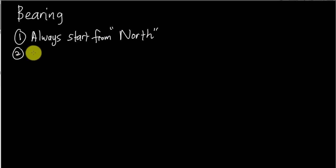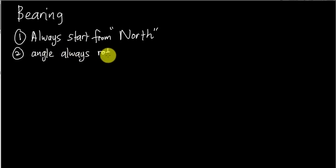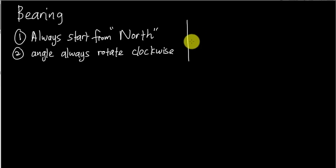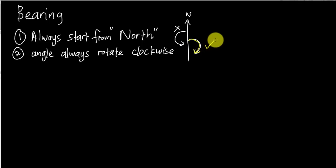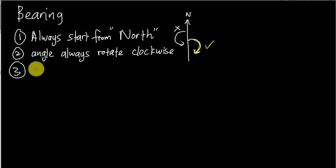The angle of bearing always rotates clockwise — the same direction as a clock. If north is here, the angle always rotates in that clockwise direction. Rotating anti-clockwise from north is wrong. The last key rule is that bearing is always written in three digits.